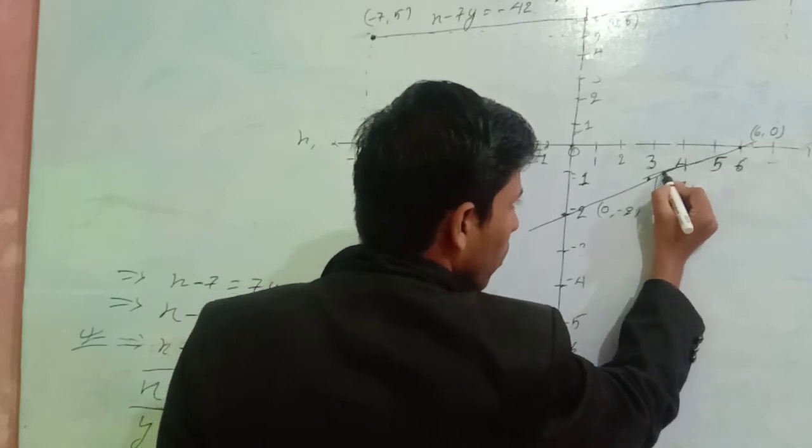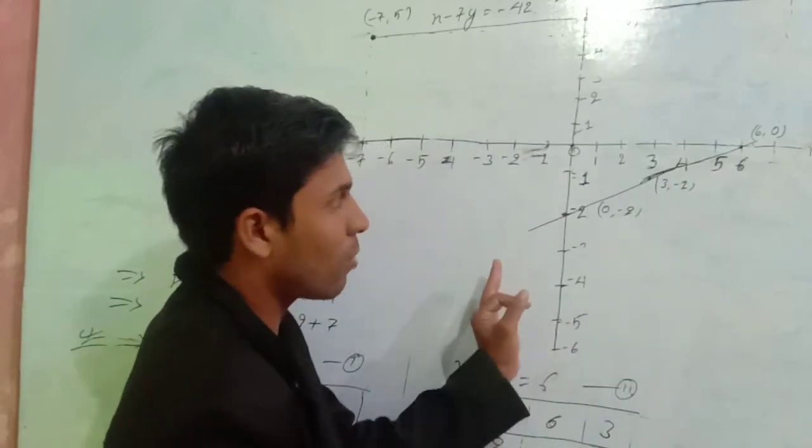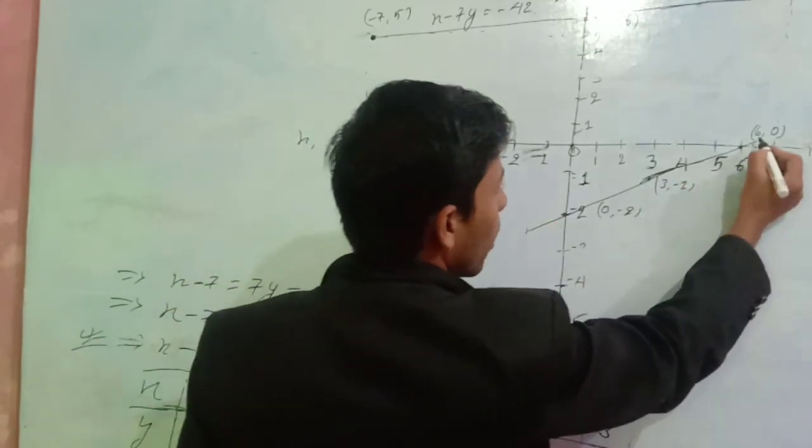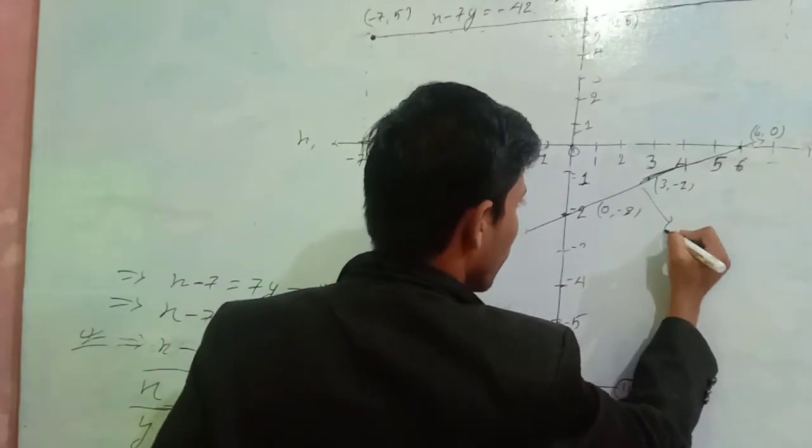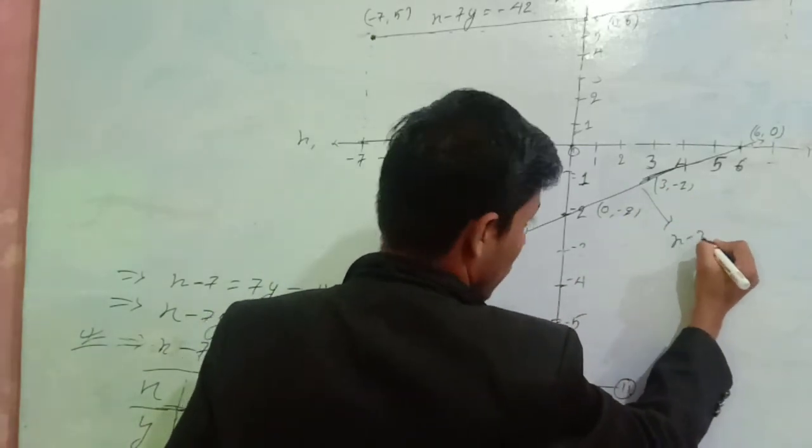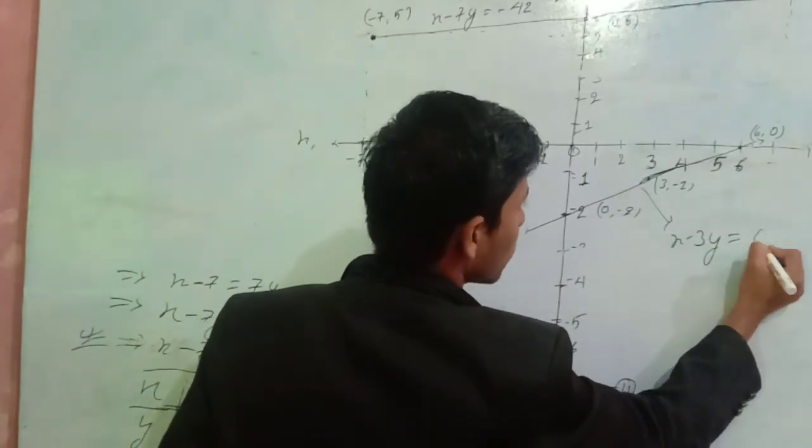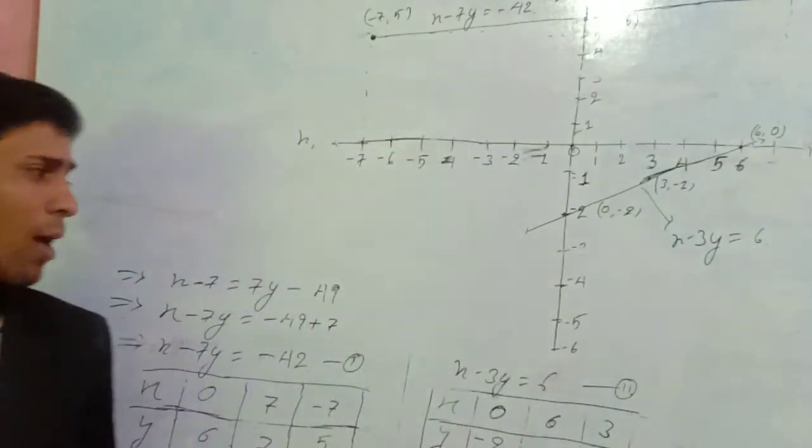This is the count. What is this? This is the count. X minus 3Y equals 6. Let me see what you understand.